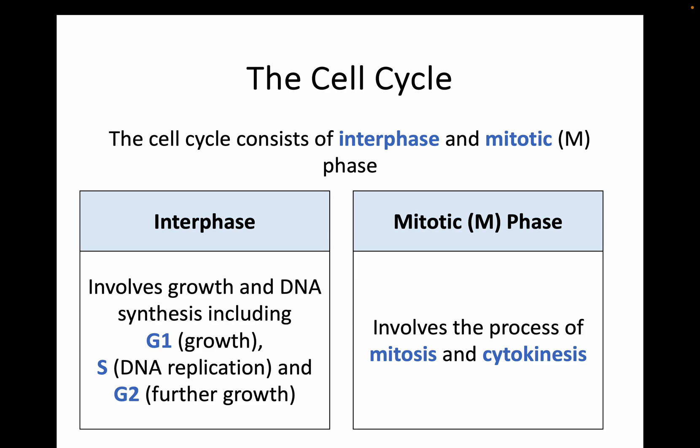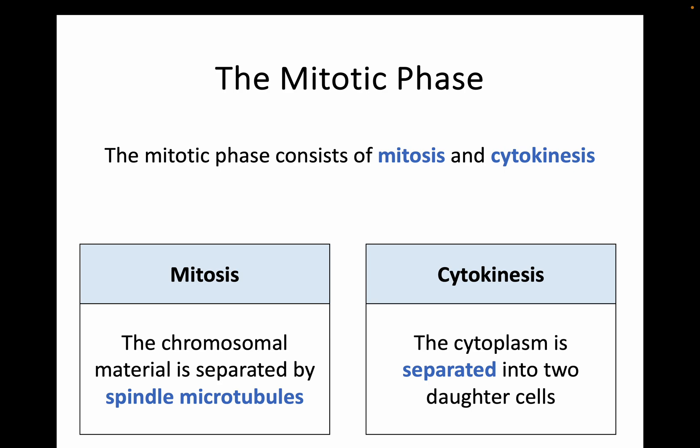The mitotic phase is the process of mitosis and then finally cytokinesis. The process of cell division or mitosis involves chromosomes being separated by spindle fibres — we now refer to them as spindle microtubules, because spindle fibres are made up of microtubules, which are those hollow cylinders made up of the protein tubulin. Cytokinesis is when the cytoplasm is separated into two daughter cells. So the mitotic phase covers what you looked at in National 5: mitosis is the separation of the chromosome material, and cytokinesis is the final separation of the cell into two cells.